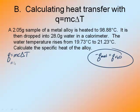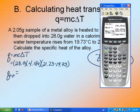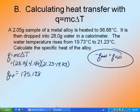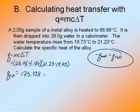My q of the water is going to be 28.0 grams times the specific heat times the change in temperature, which is 21.23 minus 19.73. And the q of my water is, plug it into my handy-dandy calculator, 28 times 4.184 times 21.23 minus 19.73 is 175.728 joules.